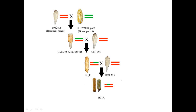Now we will see the overall procedure or integration of the LPA2 loci in our inbred line. Our inbred UMI 395 is used as a recurrent parent and our LPA2 mutant is used as a donor parent. From this the F1 hybrid was developed and it is again crossed with our inbred. In this way the BC1F1 population was developed, and similarly the BC2F1 population was developed.